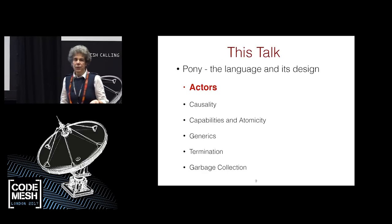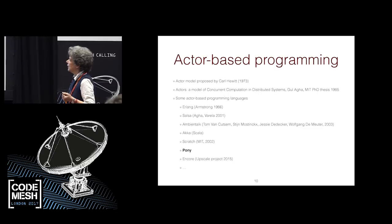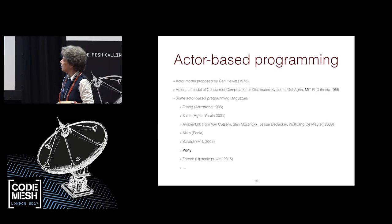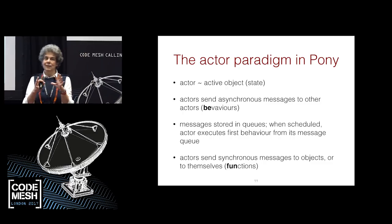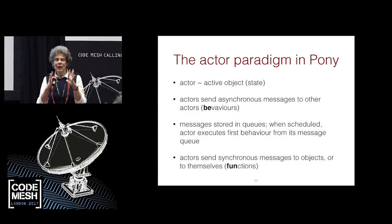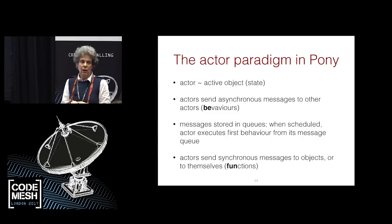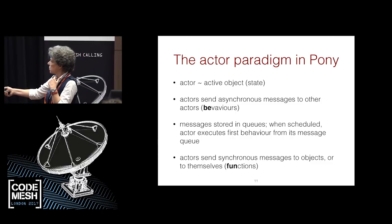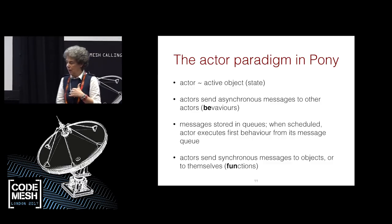First of all, actors. What are actors in Pony? An actor is an active object, and it has got state, and state is mutable. We love state. Actors send asynchronous messages to each other, and when they receive such a message, they can take it off the queue and execute it — those are called behaviors. We also have synchronous messages, which actors can only send to themselves or to objects, and those are functions.